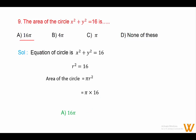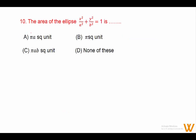Question 10: The area of the ellipse x²/a² + y²/b² = 1. The formula for the area of an ellipse is πab. Answer is option C: πab square units.